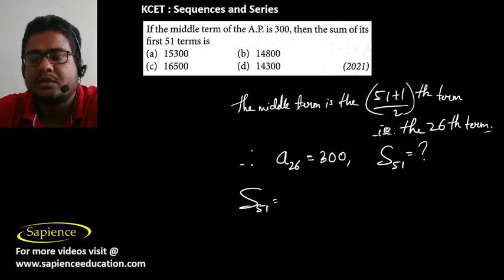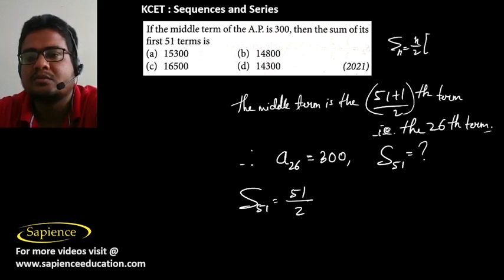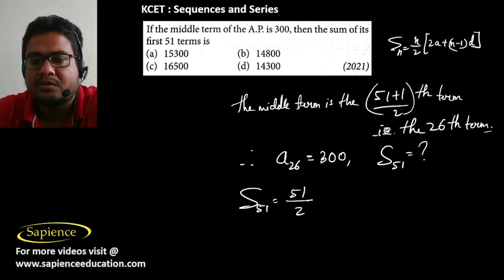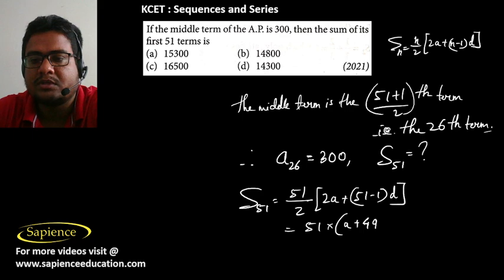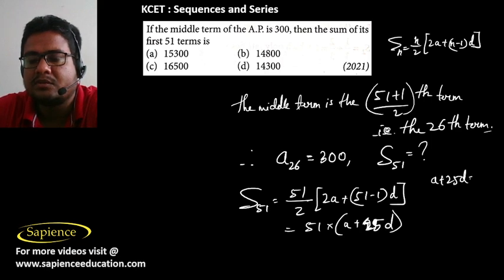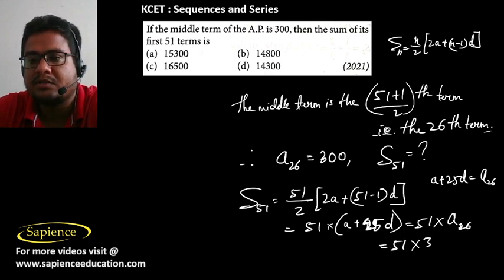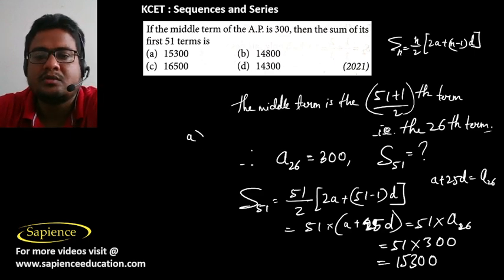S₅₁ = (51/2) × (2a + 50d) = 51 × (a + 25d). But a + 25d is nothing but a₂₆, the 26th term. So S₅₁ = 51 × a₂₆ = 51 × 300 = 15,300. Option is the correct answer.